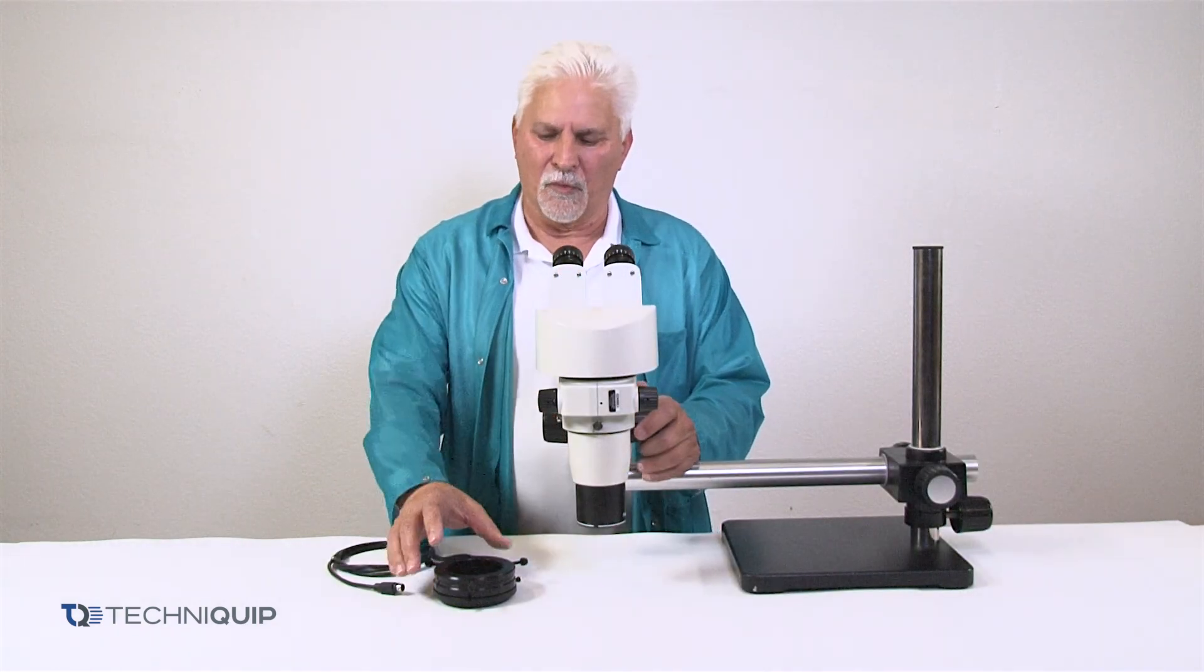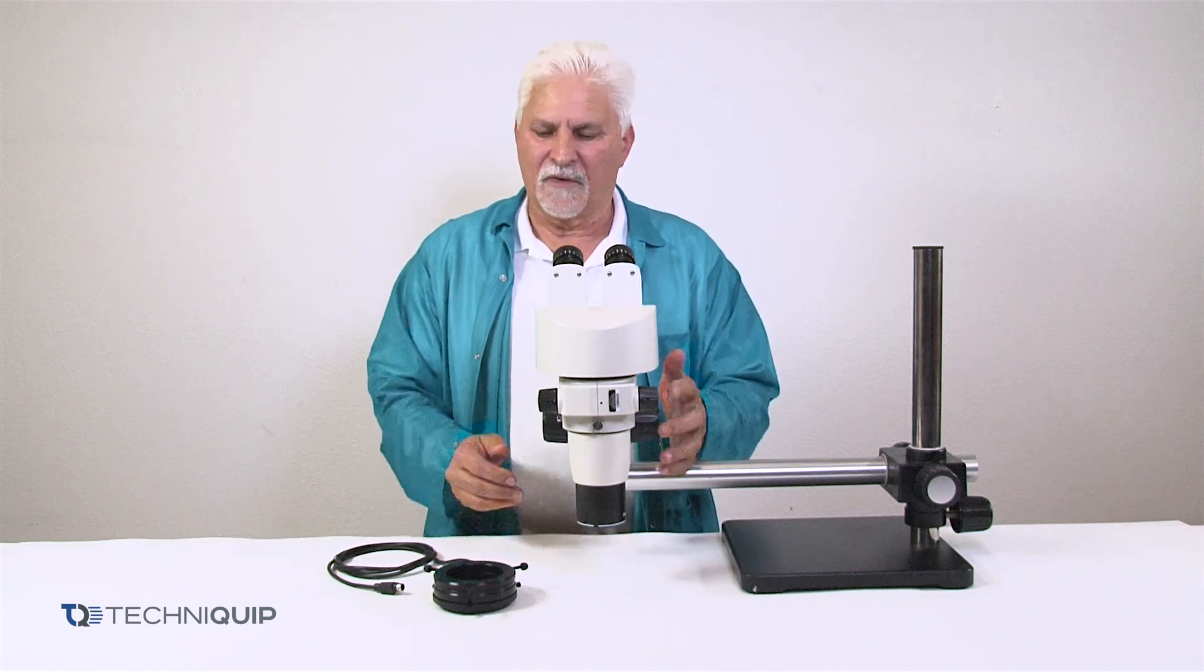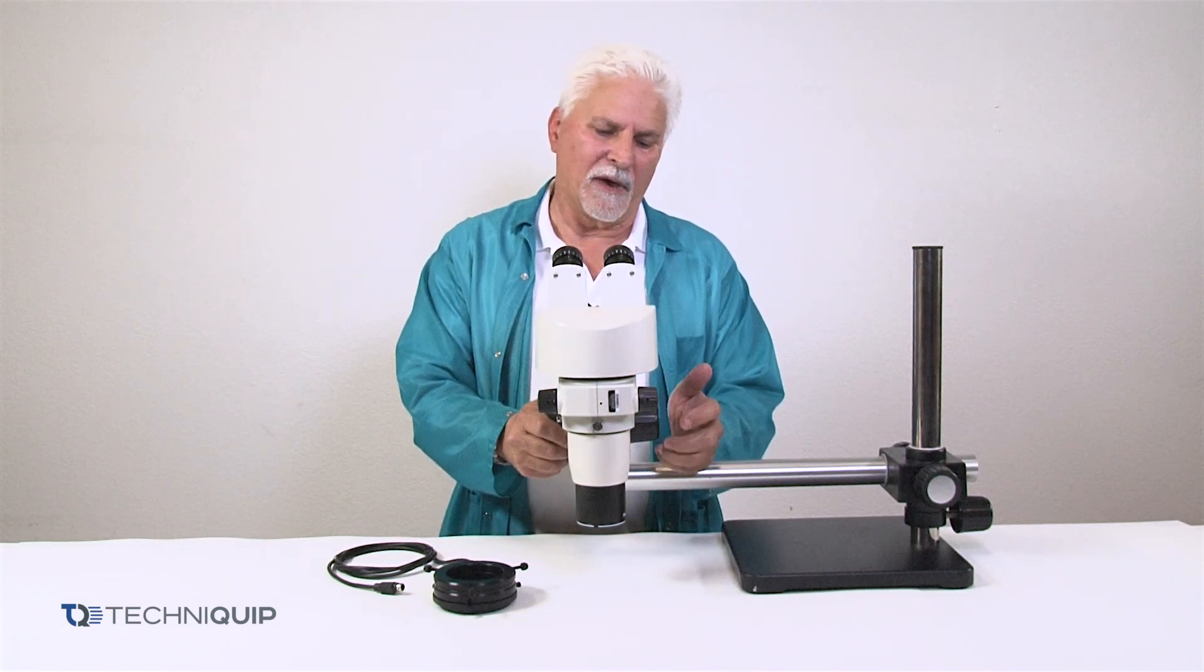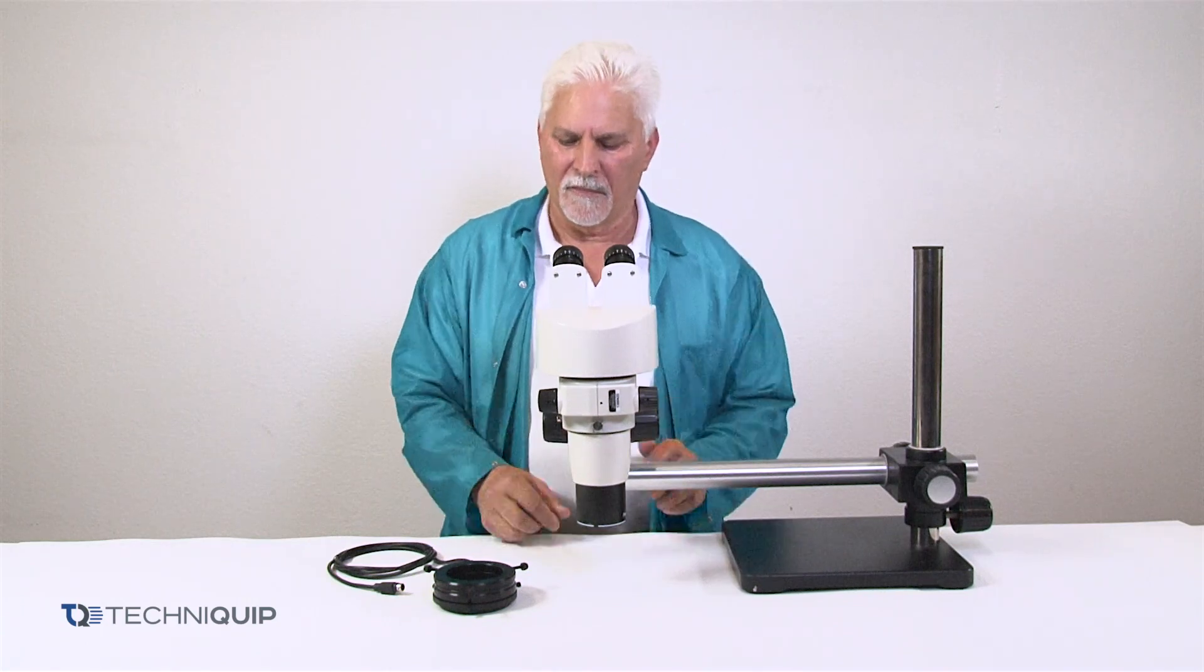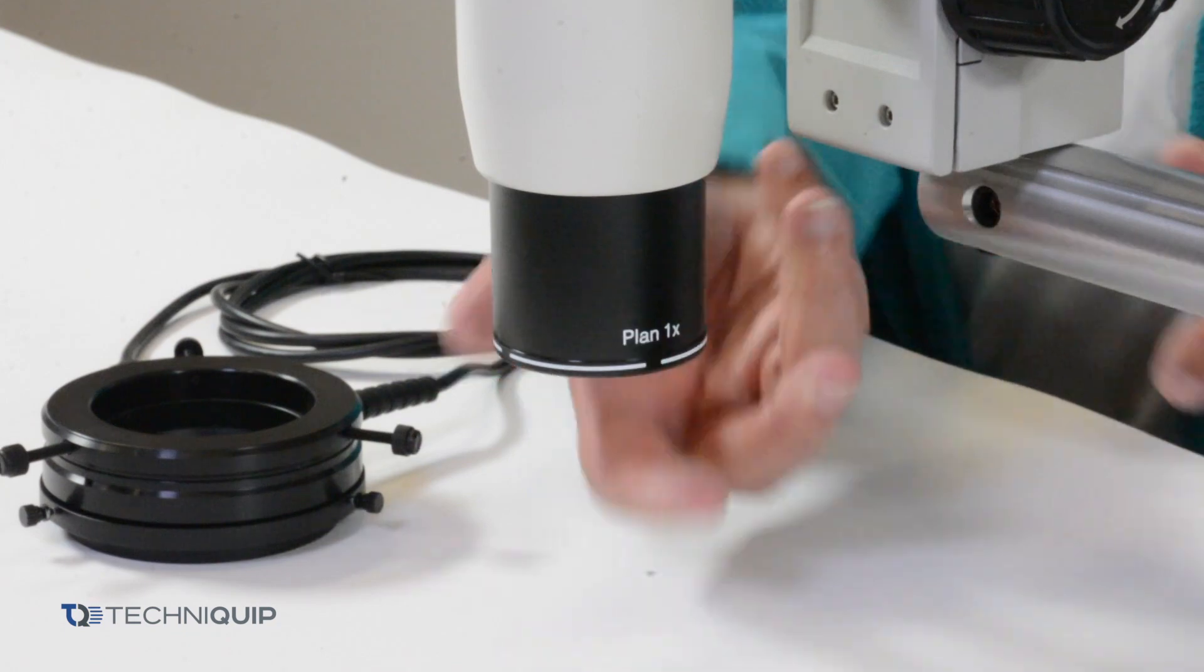We're now going to install the ring light system onto a microscope system. This is a fairly typical microscope that we use in manufacturing or inspection areas. This one in particular has an objective lens, a large lens on the bottom.